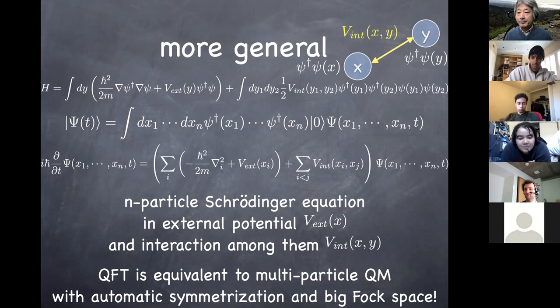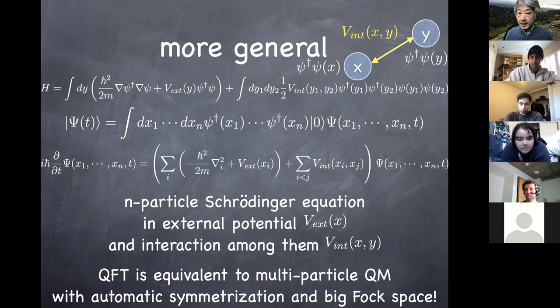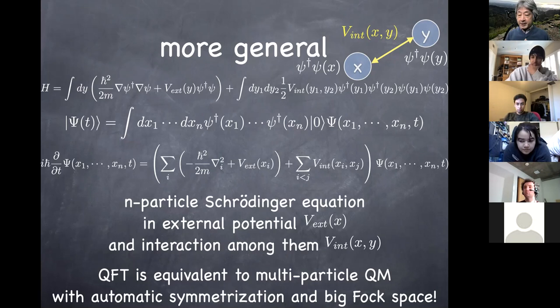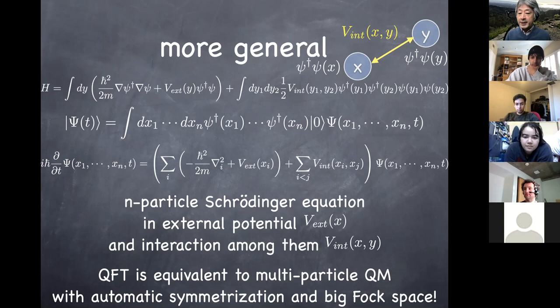Student question (Shirad): What is the Fock space? The Fock space is the big Hilbert space we constructed. Starting from the vacuum state |0⟩, you act ψ† on it to get the collection of one-particle states, act two ψ†'s to get two-particle states, and so on. All of them live in the same Hilbert space because you can go up and down in the number of particles using creation and annihilation operators. The Fock space is the collection — the direct sum of the vacuum state, the one-particle Hilbert space, the two-particle Hilbert space, and so on.